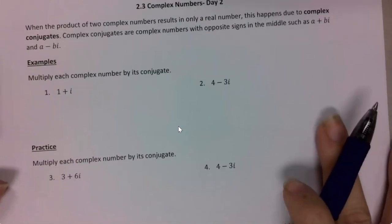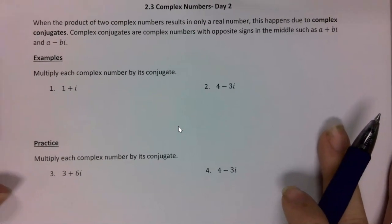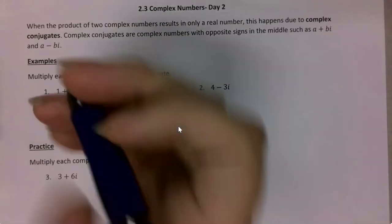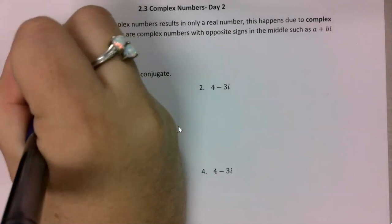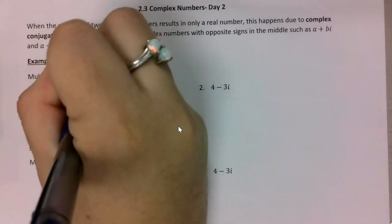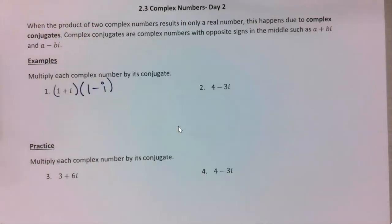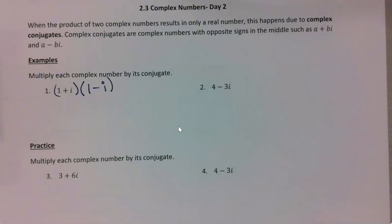First we're just going to practice by finding conjugates. On number one, it has one plus i. Its conjugate is going to be one minus i. So I want to multiply by that.